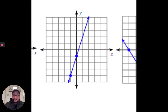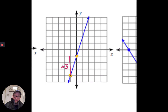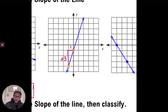For the next problem: identify your two points, always start at the point on the left, and go up or down first. Starting at the left point, we go up three to reach the same height as the other point — so our rise is positive 3. Then we go one to the right — that's our run. Rise over run gives us 3 over 1, which reduces to just 3. The slope is 3.